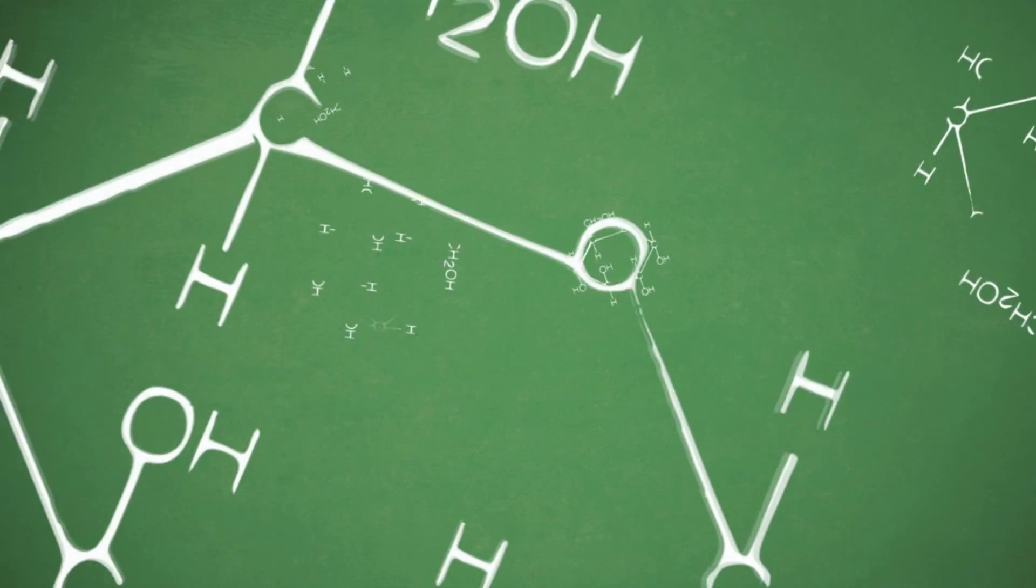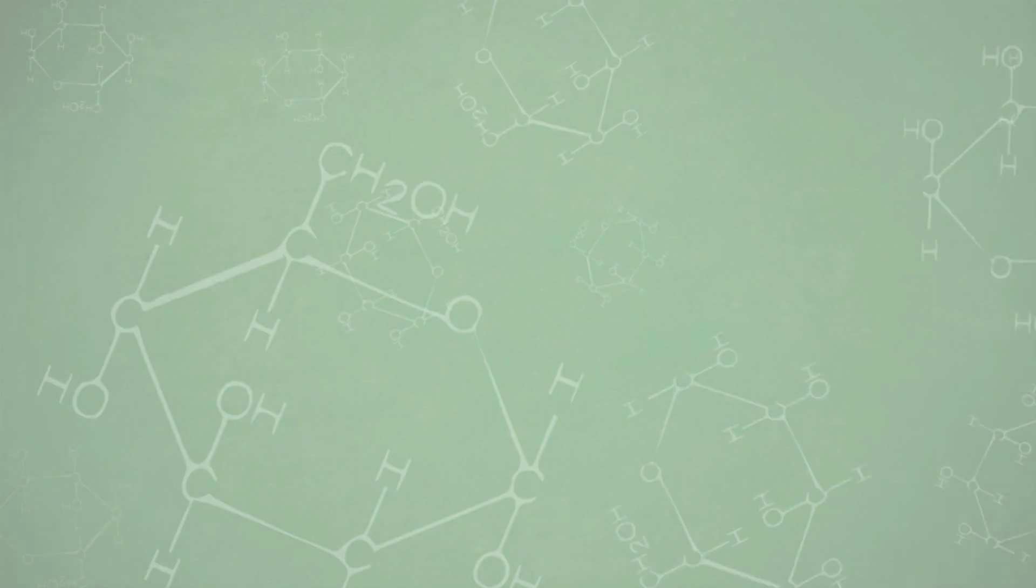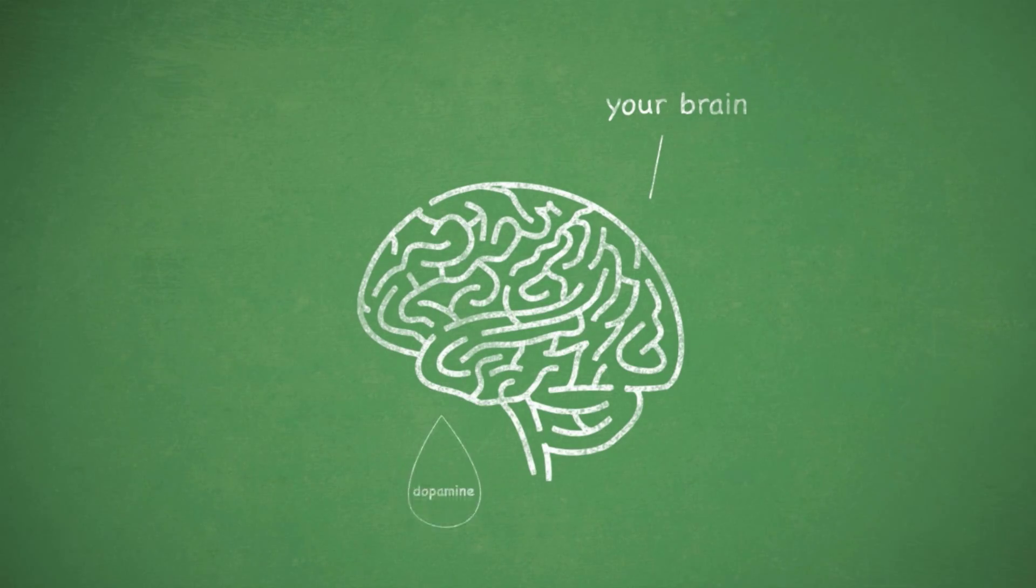But it's no surprise we love sugar, because our brains are hardwired to crave it. Sugar causes our brains to release dopamine, which makes us feel good and want more.